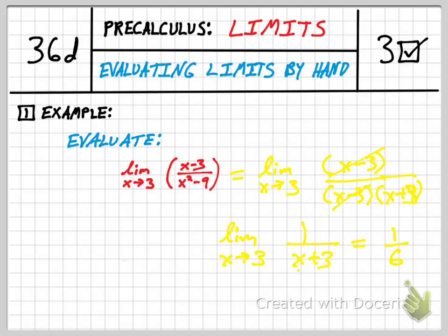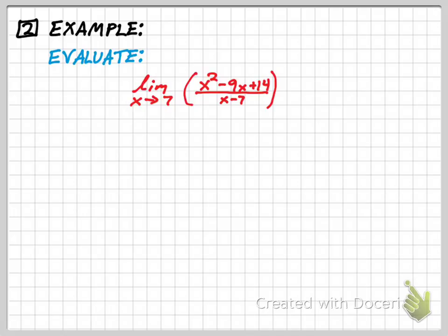Here's our example 2: limit as x approaches 7. You could try directly substituting in 7. Let's do that really quickly and you get 49 minus 63 plus 14, and that turns out to be 0. Then you have 7 minus 7, which also turns out to be 0. So that 0 over 0 scenario comes up quite a bit, which means I've got to think about the limit and think about the expression in a different way.